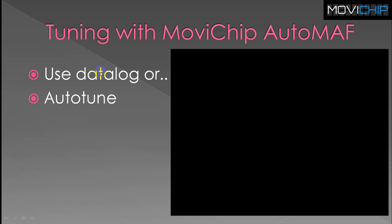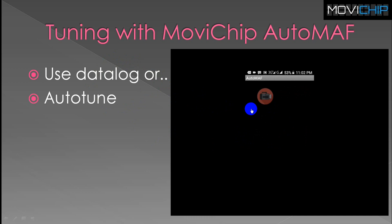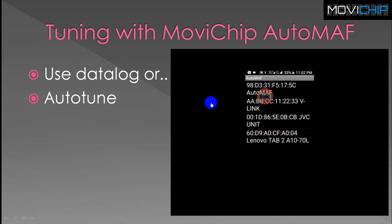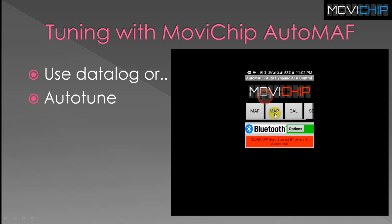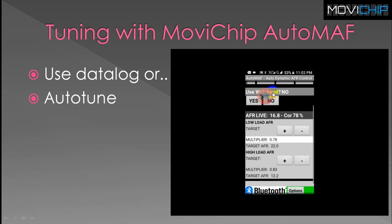With the Auto Math you can tune the same way - make a data log and make an adjustment to the multiplier - or you can do it automatically. This is the app when you open it up; you only need to use it when making adjustments to the multiplier. Otherwise you just get in the car and drive - no control units needed. Connect to the Auto Math via Bluetooth. Along the top we've got Math, Map, Cal, and Set menus.